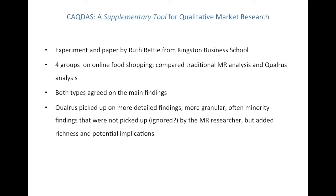This goes back to a paper from Ruth Retty that I mentioned earlier. She did a little experiment where she had a market researcher do four groups on online food shopping, and then compared that analysis with computer analysis using a package called Qualrus. Both types actually agreed on the main findings — there was no dispute there at all. But what the Qualrus analysis did was to pick up on things that were much more detailed, much more granular, and often minority findings that weren't mentioned by the market researcher, but did add richness and potential implications. Ruth felt it was really about using CAQDAS as a supplementary tool for qualitative market research — it's not either/or, it's actually doing both.